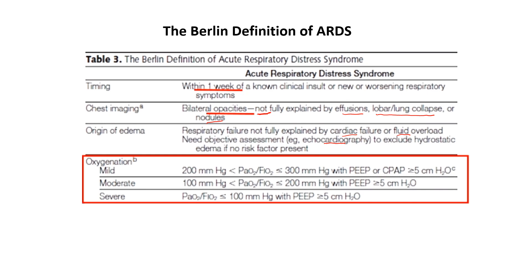The origin of edema — i.e., respiratory failure — is not fully explained by cardiac failure or fluid overload, and needs objective assessment by echocardiography to exclude hydrostatic edema if no risk factors are present. The Berlin definition did not include pulmonary arterial wedge pressure. Based on PF ratio, ARDS is classified into mild (200–300), moderate (101–200), and severe (less than 100 mmHg).